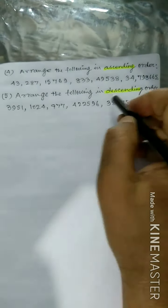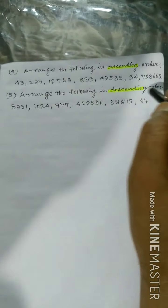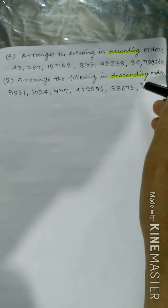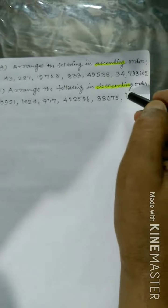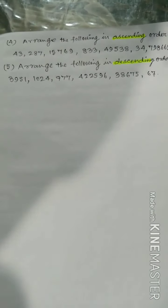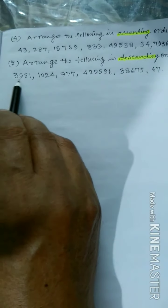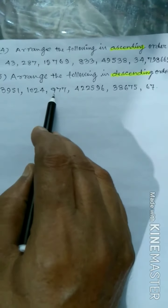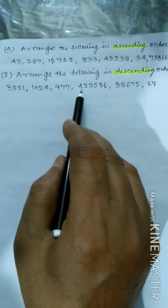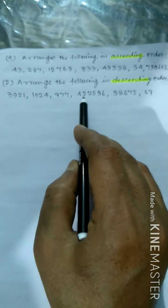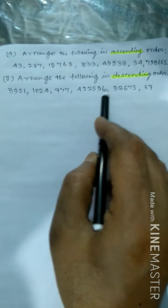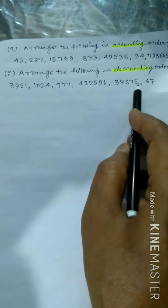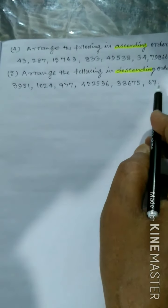Arrange the following in descending order. Descending order means decreasing order. For example, 9, 8, 7, 6, 5, 4, 3, 2, 1. As like 3,951, 1,024, 977, 4,22,596, 38,675, 67.